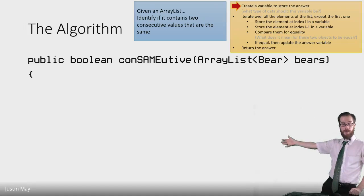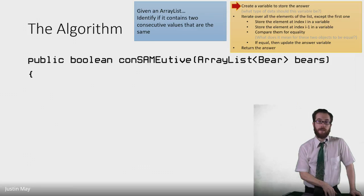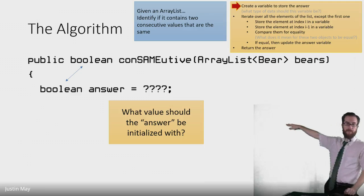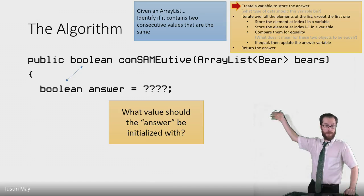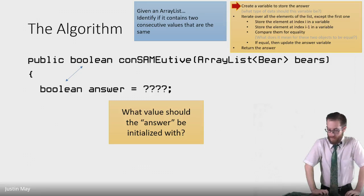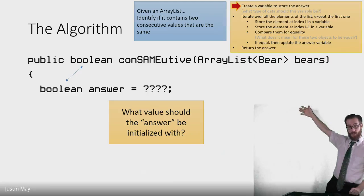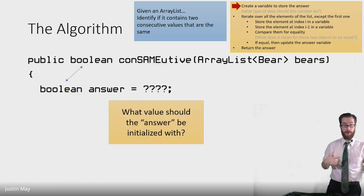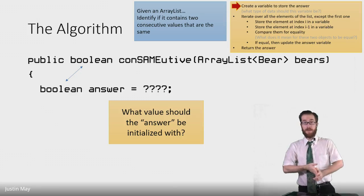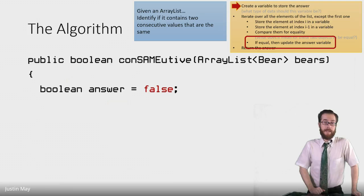So we're going to write a method called consecutive, and it's going to return true if there are two bears next to each other with the same height, and false in any other case. Convert the plan from English into code. The first thing we're going to do is create a variable to store the answer. The type of our answer is going to be boolean because that's the return type of the method. So: boolean answer equals something. We initialize it to false — because if there were no bears, if the list is empty, there are no bears next to each other with the same height, so false is the correct default.